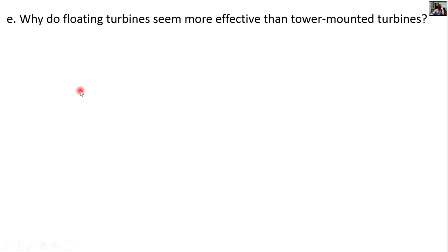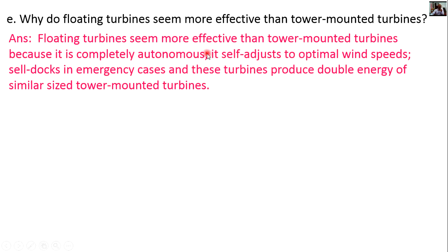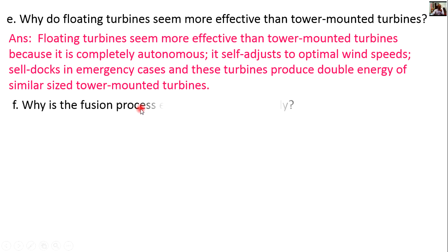Why do floating turbines seem more effective than tower-mounted turbines? Floating turbines seem more effective because they are completely autonomous, self-adjust to optimal wind speed, self-dock in emergency cases, and produce double the energy of similar-sized tower-mounted turbines.